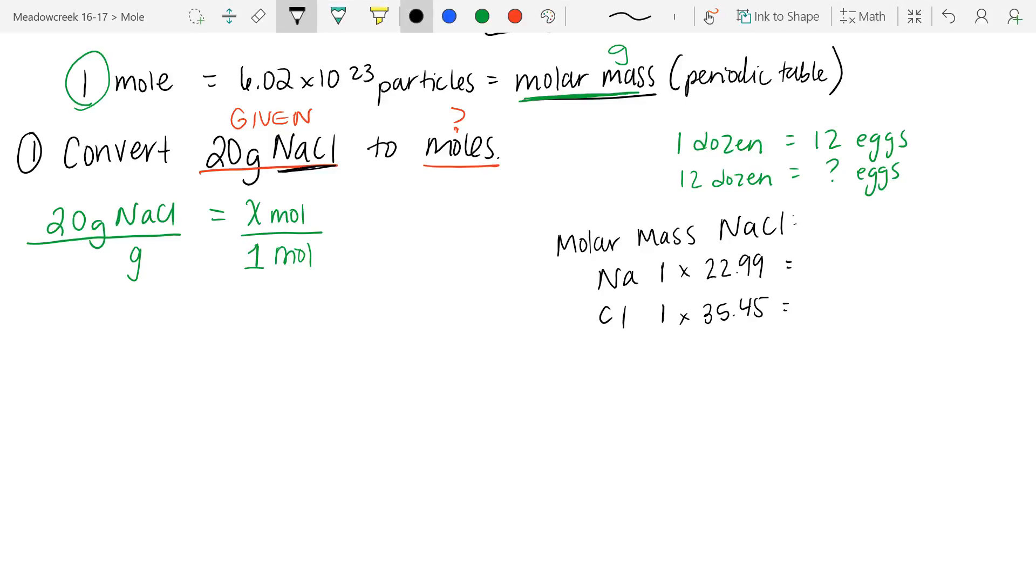And when we multiply these through, we get 22.99, 35.45, and then we add both our totals together. And when we add our totals together, 22.99 plus 35.45, we get an answer of 58.44 grams per mole.